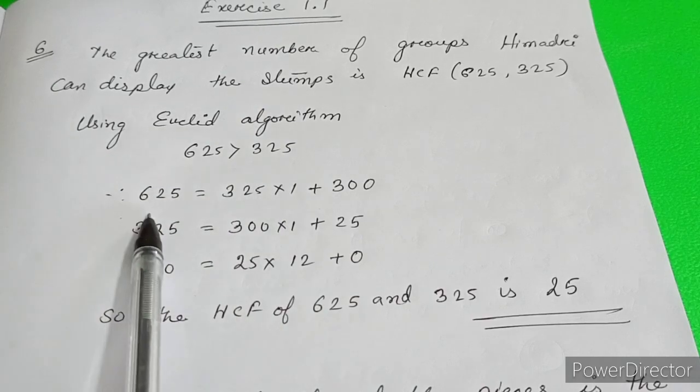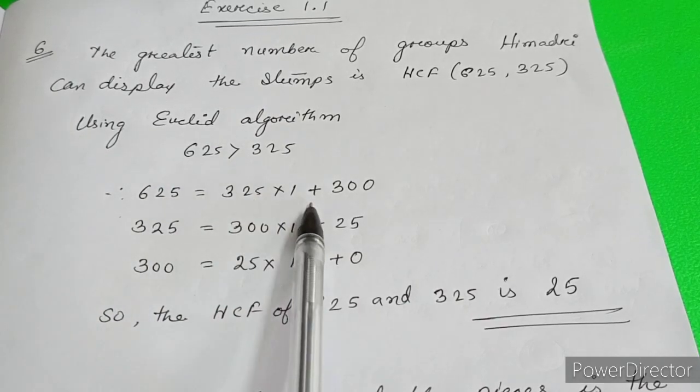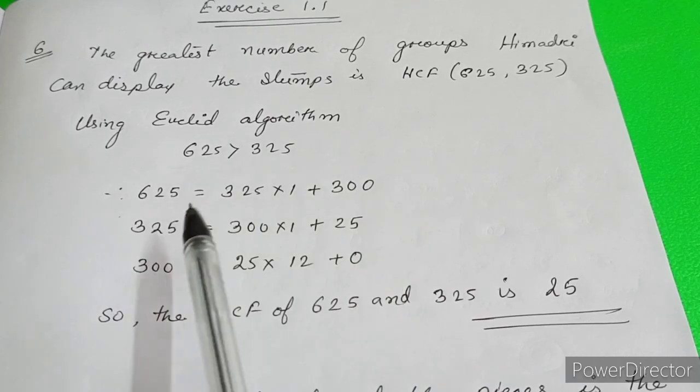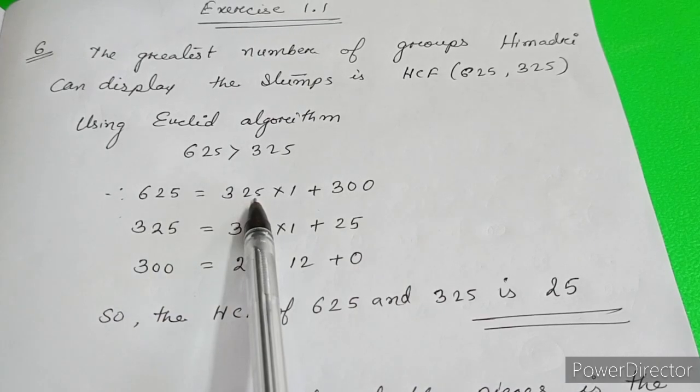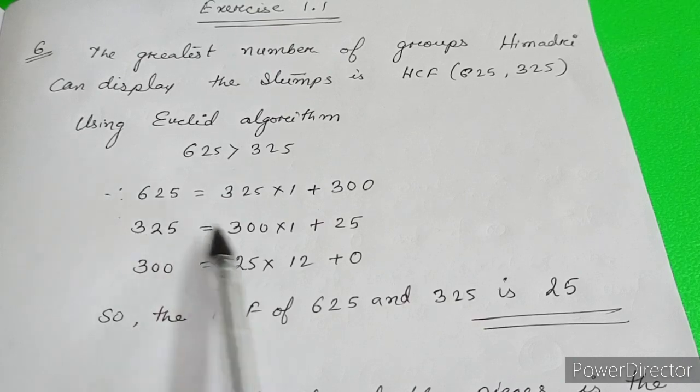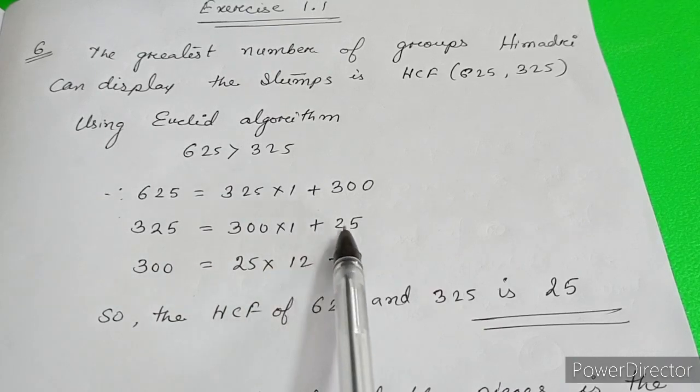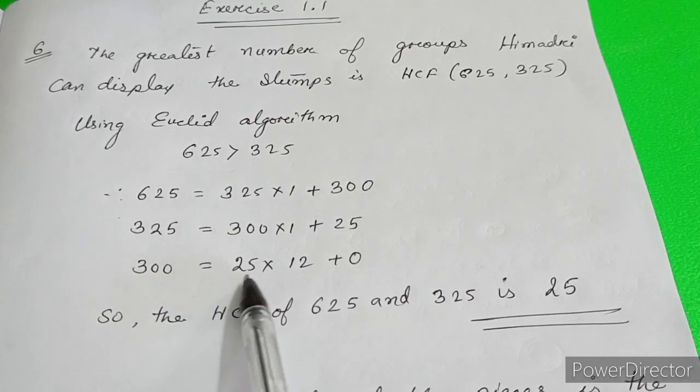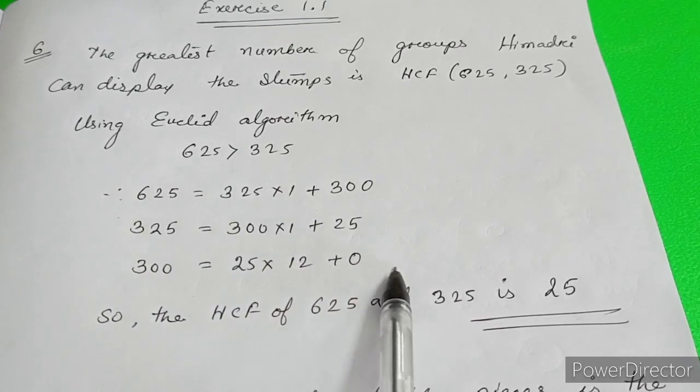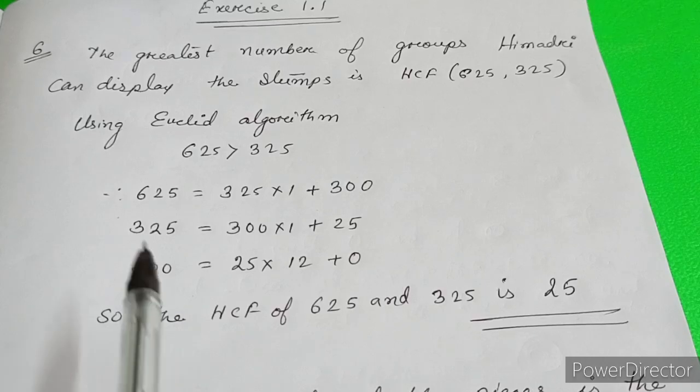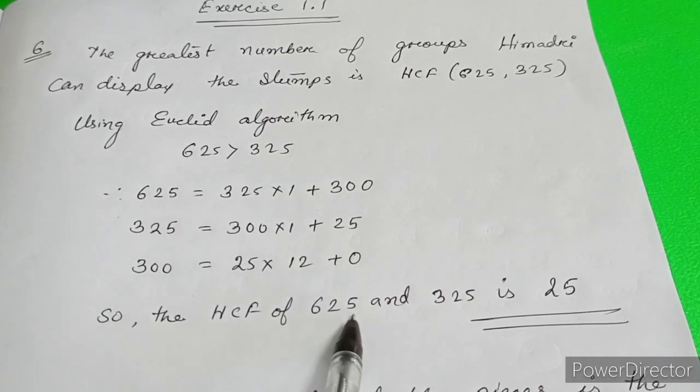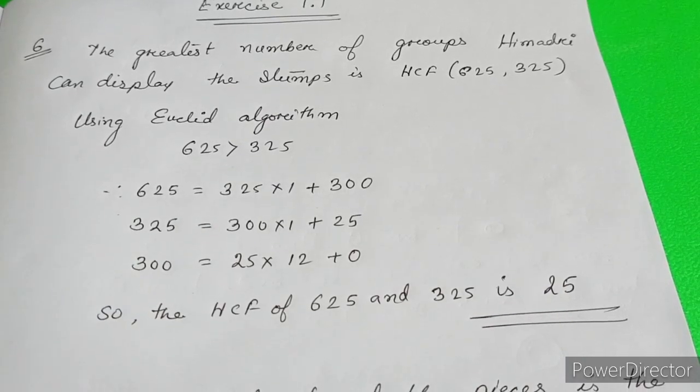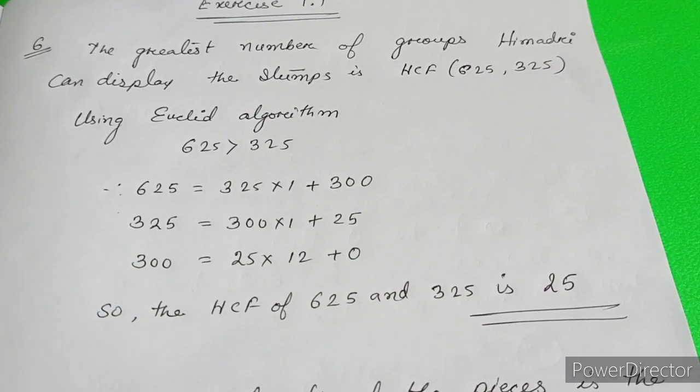625 equals 325 into 1 plus 300. 300 is the remainder. Then again this divisor will become dividend. 325 equals 300 into 1 plus 25. Then 300 equals 25 into 12 plus 0. Therefore, the HCF of 625 and 325 is 25. This is the required solution for Question Number 6.